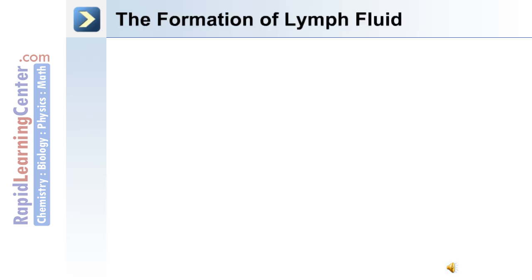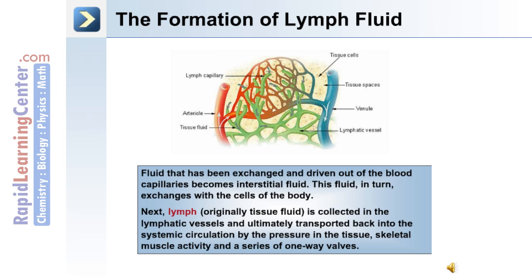Regarding the formation of lymph fluid: fluid exchanged and driven out of blood capillaries becomes interstitial fluid, which in turn exchanges with the cells of the body. Lymph, which is originally tissue fluid, is collected in the lymphatic vessels and ultimately transported back to systemic circulation by pressure in the tissue, skeletal muscle activity, and a series of one-way valves within the lymphatic vessels themselves.